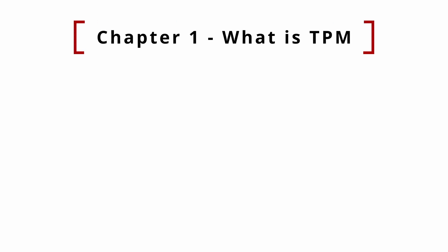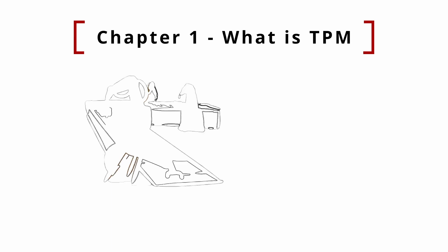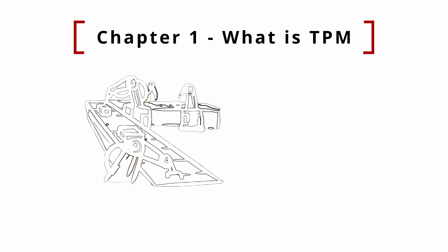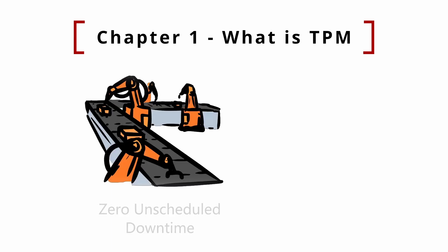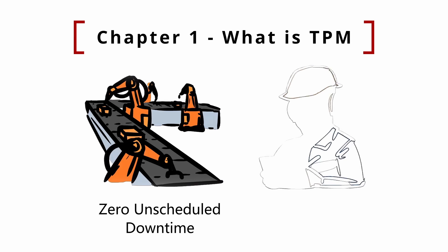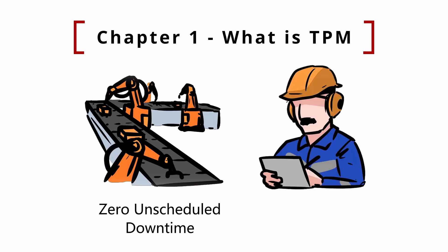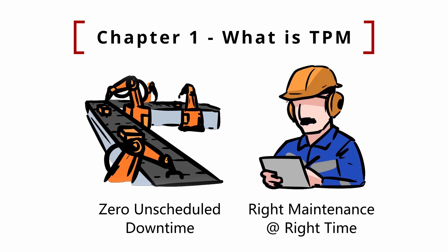Chapter 1: What is TPM and why it matters? The purpose of TPM is to have zero unscheduled downtime. To achieve this, TPM aims to have only planned downtime — for example, for preventive maintenance. The key to TPM success is to perform preventive maintenance effectively and efficiently. In other words, the right maintenance must be done at the right time to ensure that the machinery is up and running when needed.